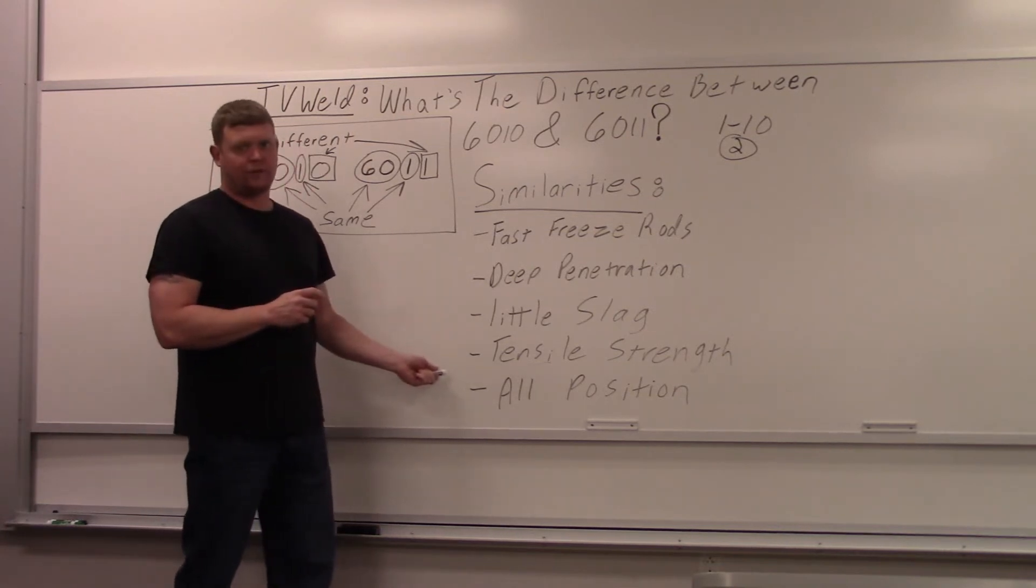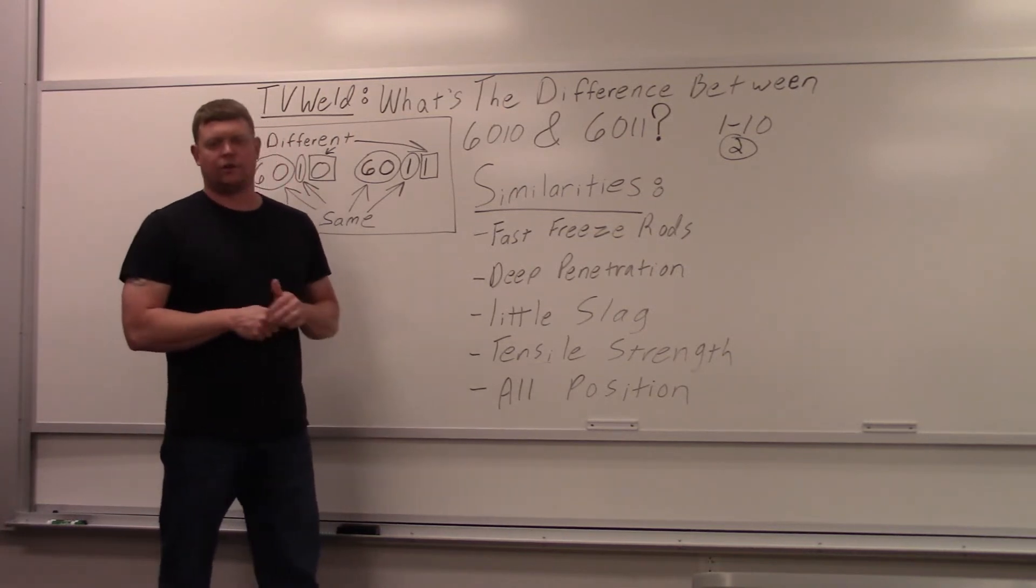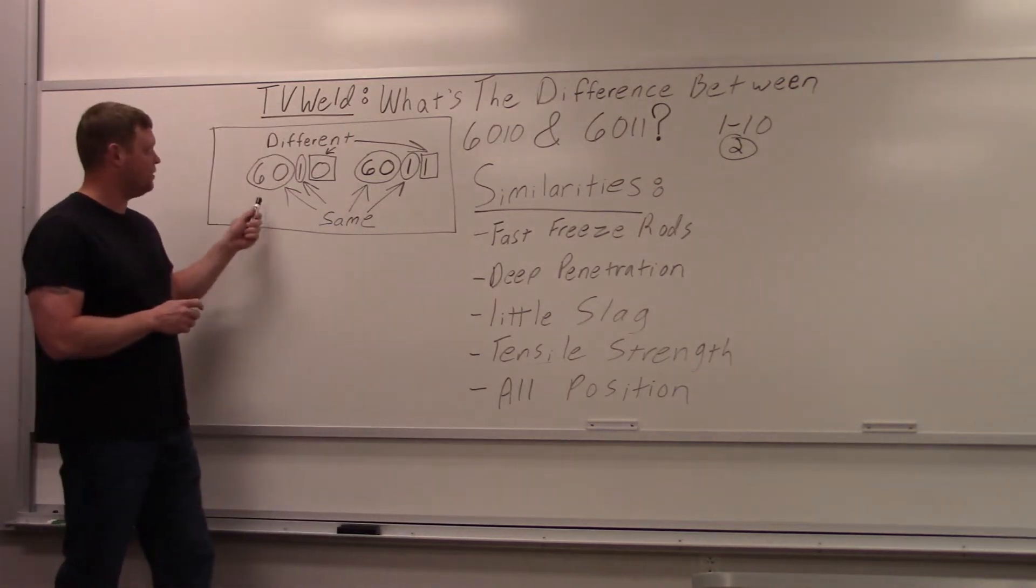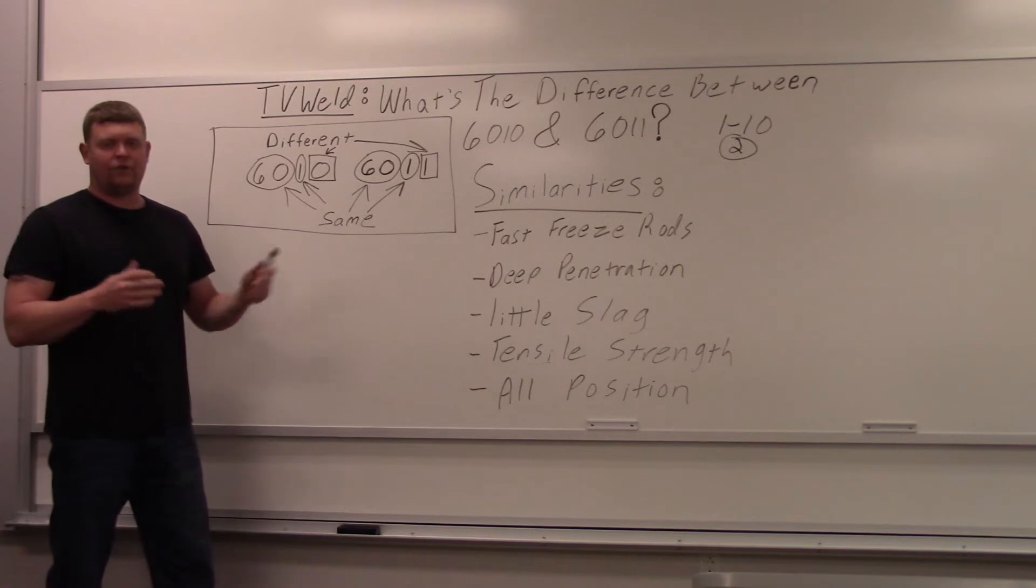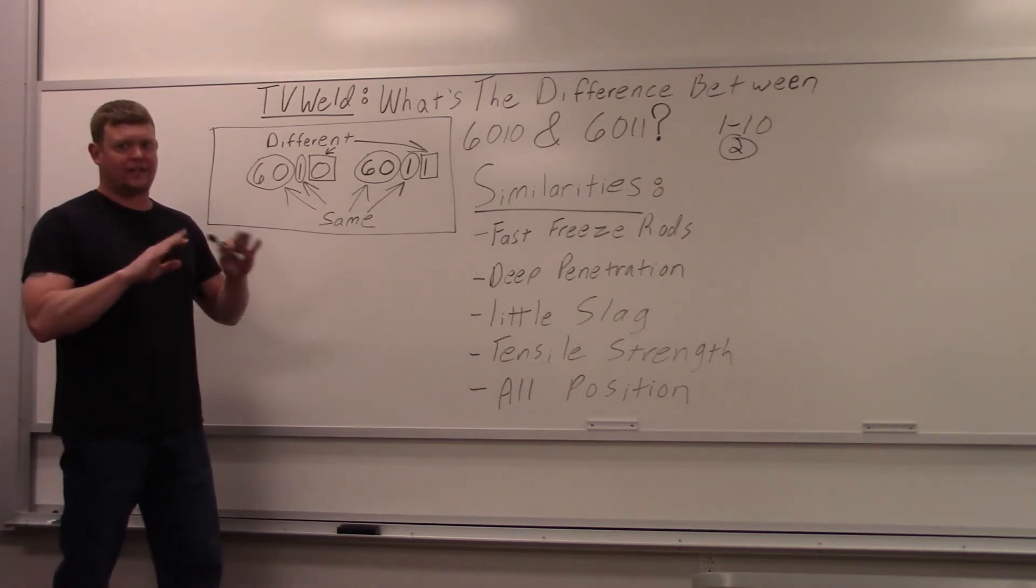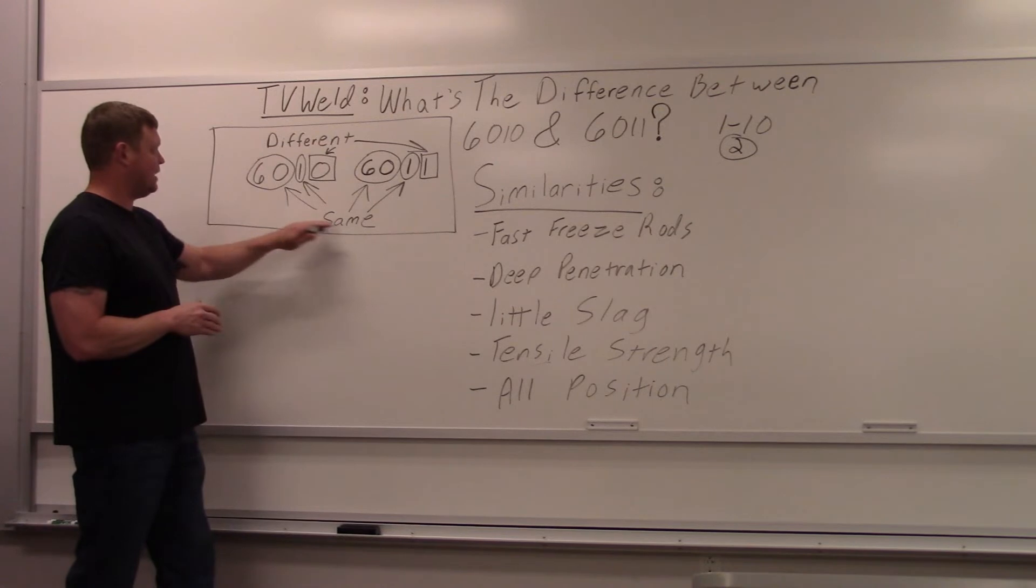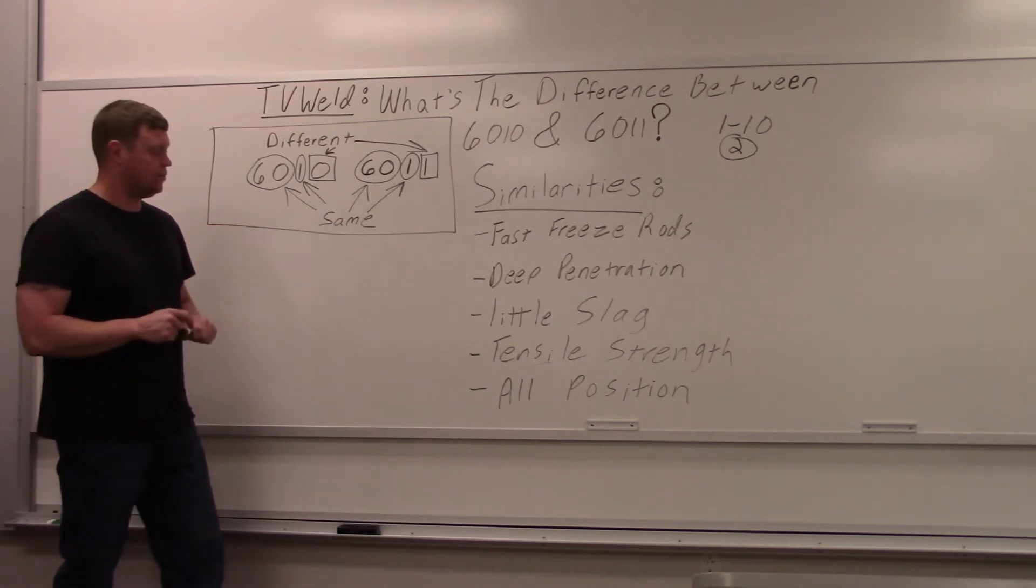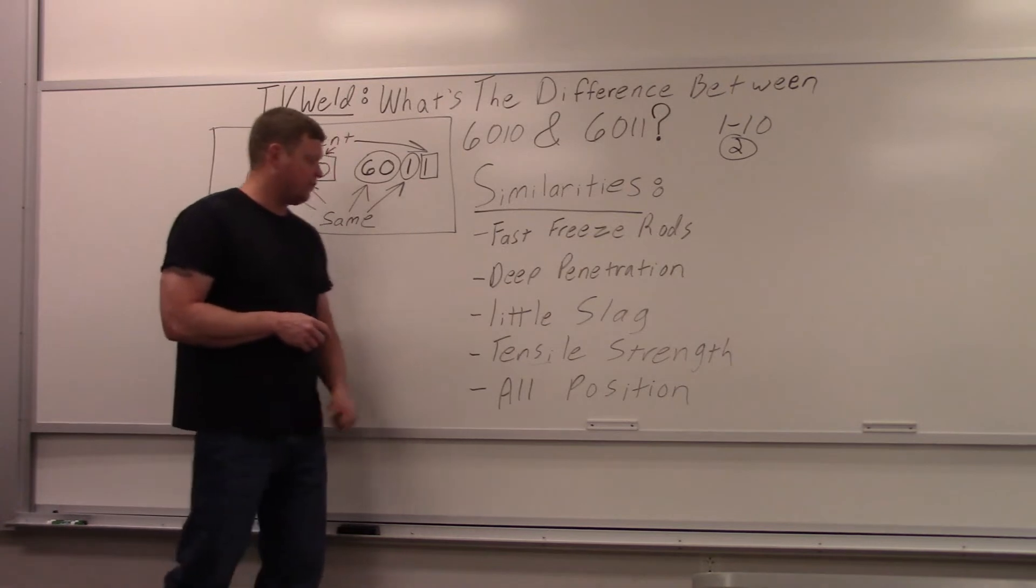We already went over the tensile strength. They're both the same. I did, however, do a little Google search, and it said that 6010 tends to be a higher tensile strength. I don't know the validity of that. There was conflicting stuff, so I just left it alone. For right now, we're going to say it's the same, 60,000 pounds minimal tensile strength, because we know that's absolutely true. And then all positions for both rods.